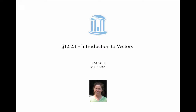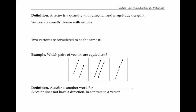This video introduces vectors. A vector is a quantity with direction and magnitude. Magnitude is also called length. Vectors are usually drawn with arrows. The tail end is called the initial point, and the tip of the arrow is called the terminal point.